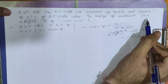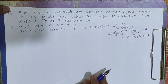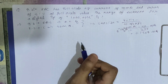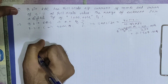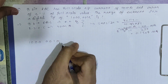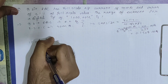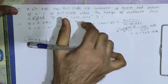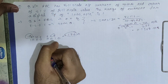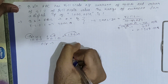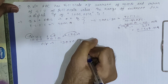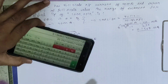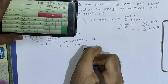Now we find the range of current for digital input 1000010. We convert this binary number to decimal: 1000010 in binary equals 128 plus 2, which is 130. So the output current for this input is 130 multiplied by the step size of 0.1568mA, which gives 20.3921 milliamperes.